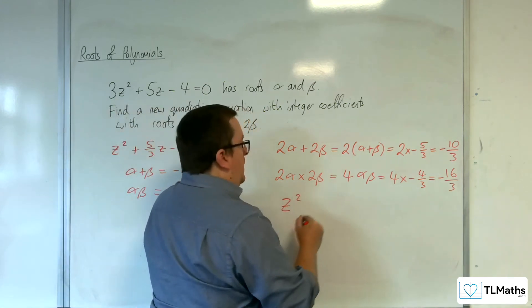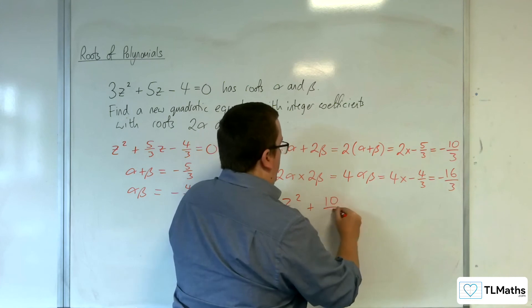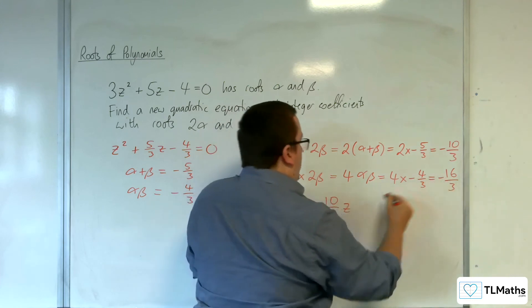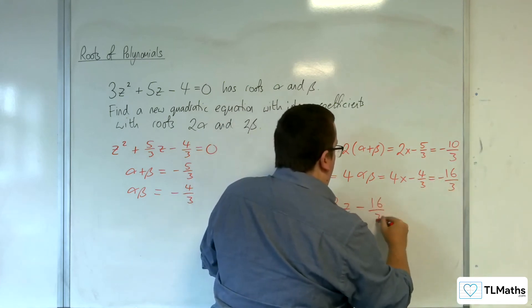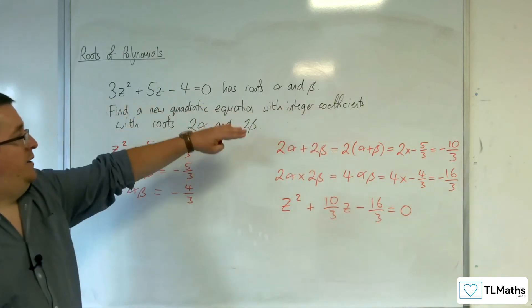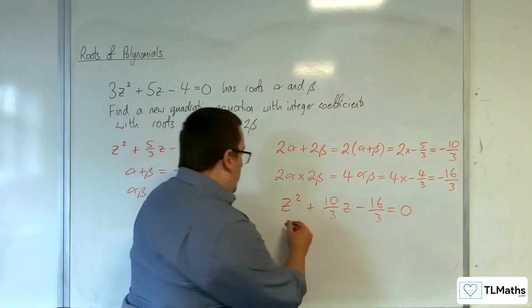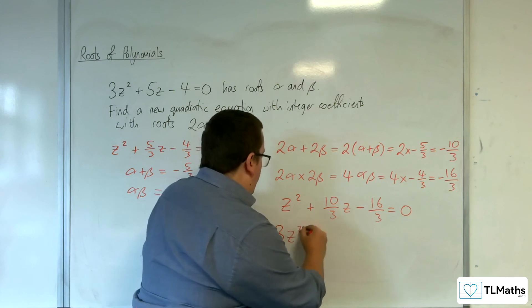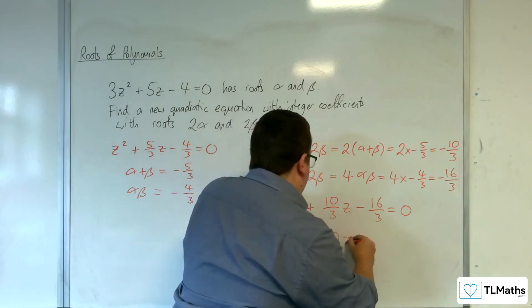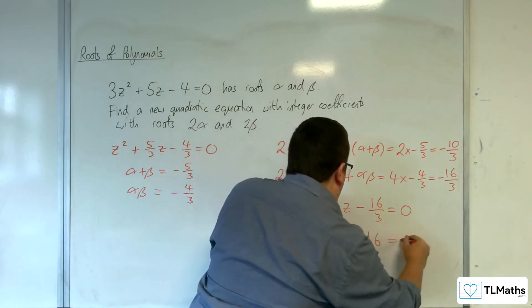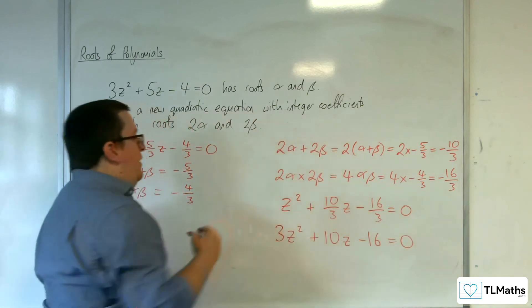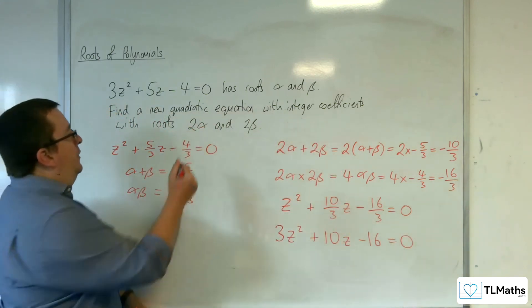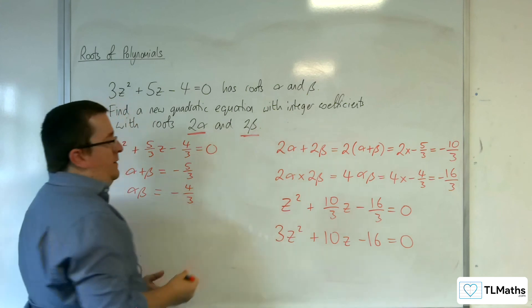Now, I still need integer coefficients. So I need to multiply through by 3. So 3z² + 10z - 16 = 0. And this has roots 2α and 2β.